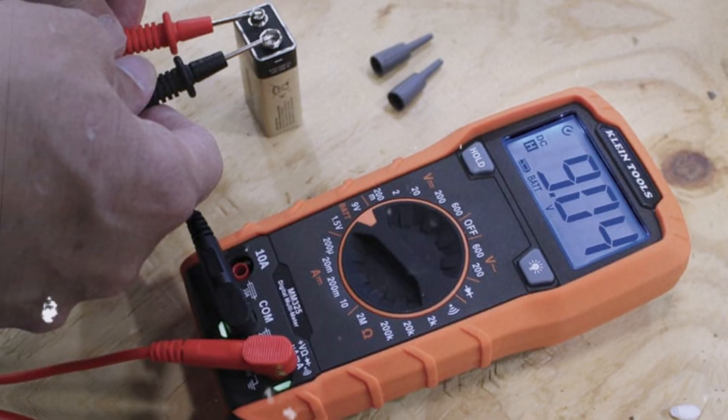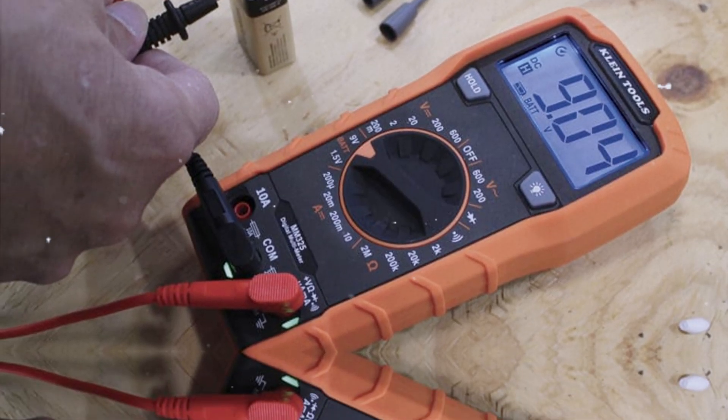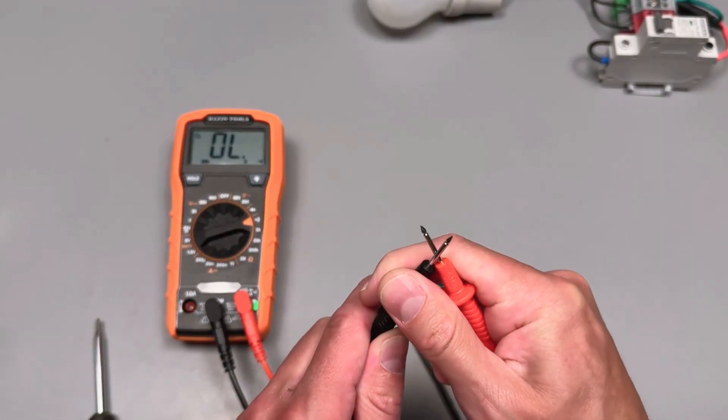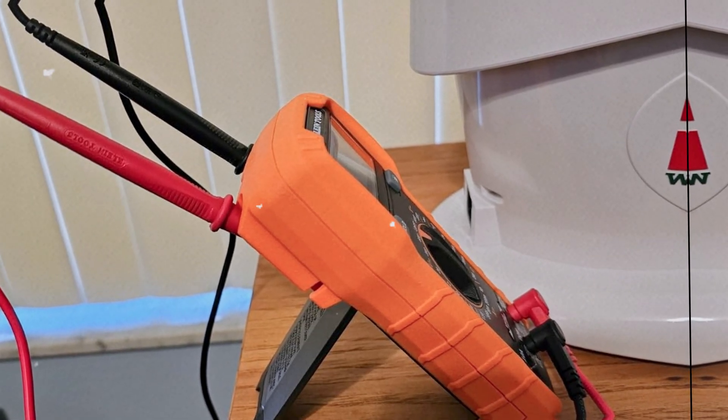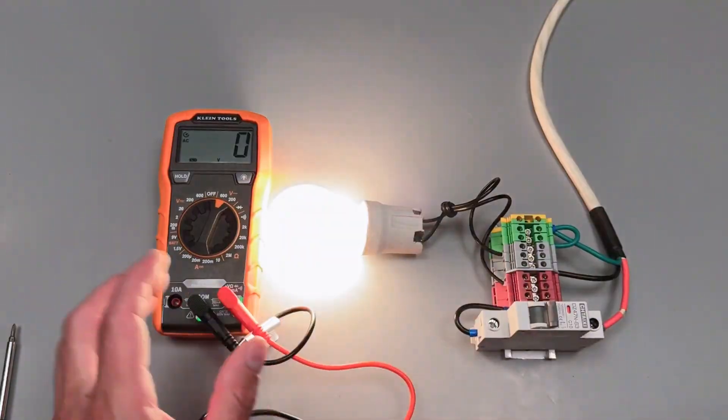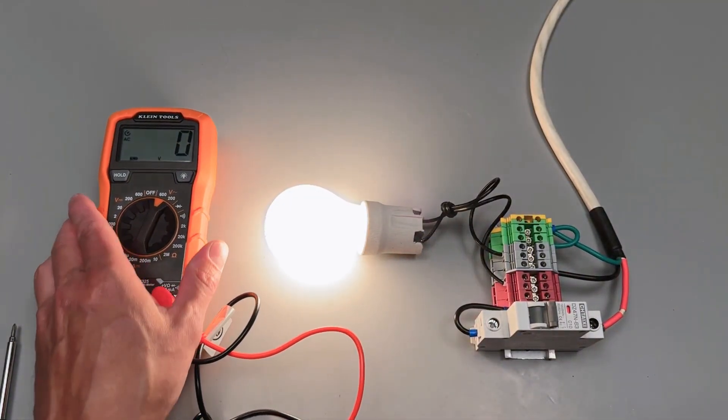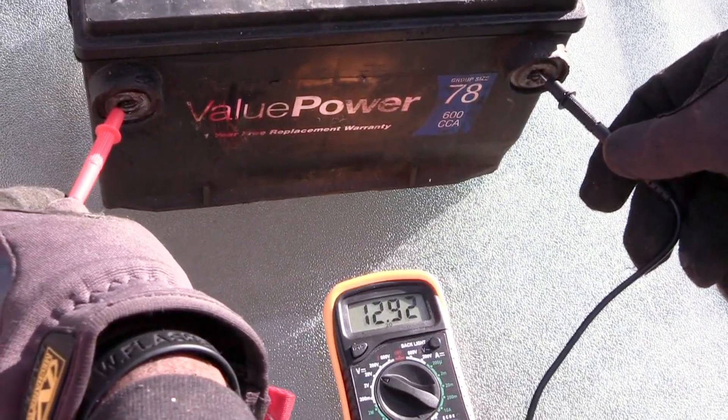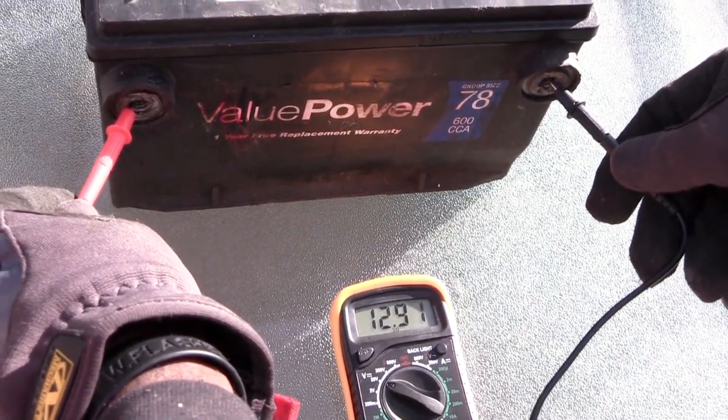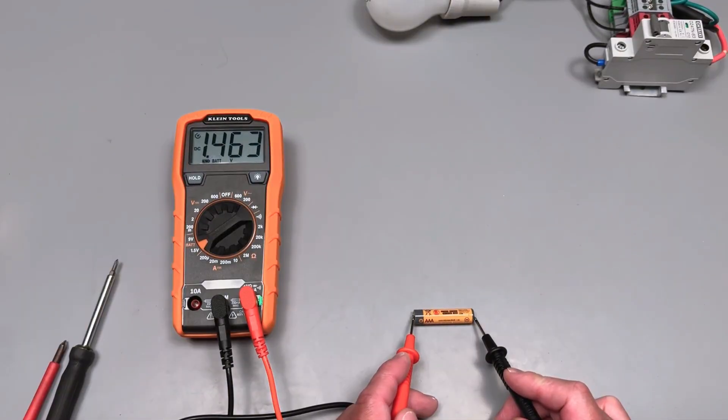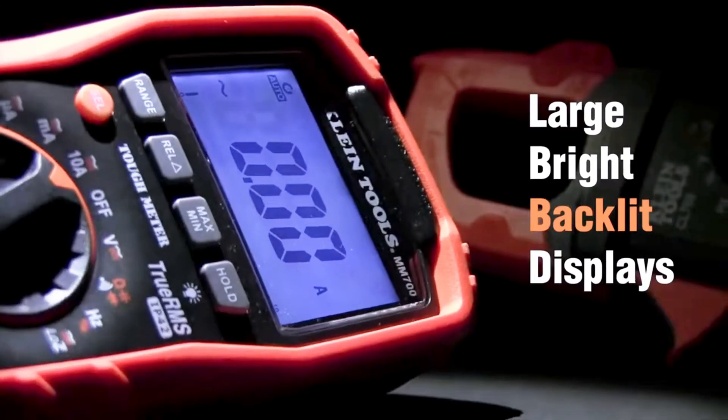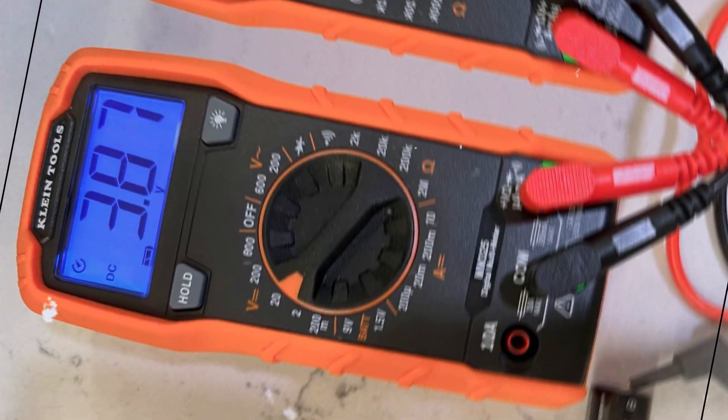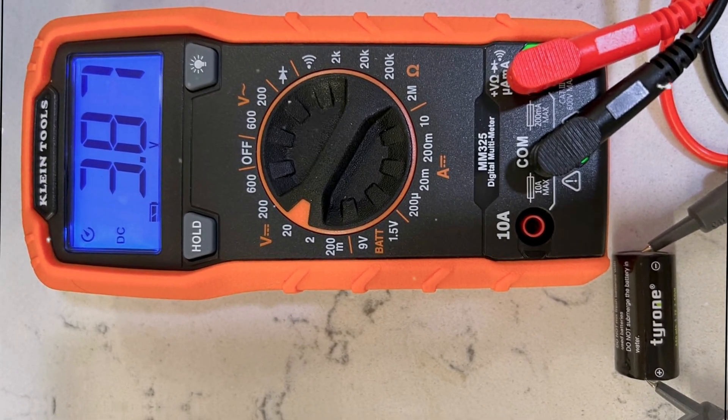Measuring AC and DC voltage up to 600 volts and 10 amperes of DC current makes this model exceptionally versatile. Homeowners will appreciate its ability to function as an audible continuity tester, ensuring circuits are working correctly with minimal effort. The battery testing feature is a thoughtful addition that covers common battery types such as AA and 9V. A backlit LED display enhances readability, even in dim environments.